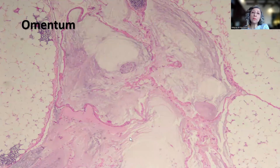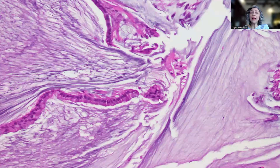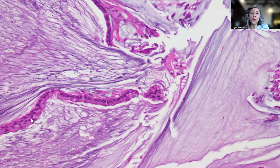Remember that you always have to look for the presence or absence of epithelium, because this really would affect the staging of the disease. And on high-power magnification, as you can see, strips of epithelium.